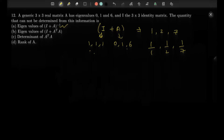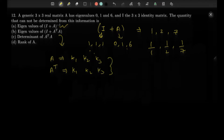For option (b), can we determine the eigenvalues of (AᵀA + I)? A has eigenvalues k₁, k₂, k₃ and Aᵀ also has eigenvalues k₁, k₂, k₃. However, AᵀA does not necessarily have eigenvalues k₁², k₂², k₃². You can verify this with an example. So the eigenvalues of AᵀA cannot be determined from the eigenvalues of A alone, meaning the eigenvalues of (AᵀA + I) also cannot be determined. This is the correct answer: option (b).